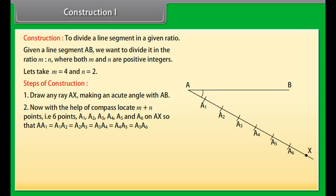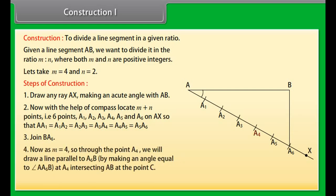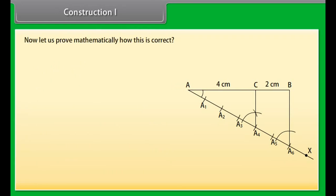A1, A2, A3, A4, A5 and A6 on AX so that AA1 equals A1A2 equals A2A3 equals A3A4 equals A4A5 equals A5A6. Join BA6. Now M is equal to A4, so through the point A4, we will draw a line parallel to A6B by making an angle equal to AA6B at A4 intersecting AB at the point C. Then AC is to CB equals 4 is to 2.